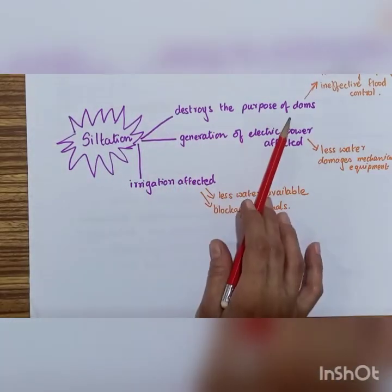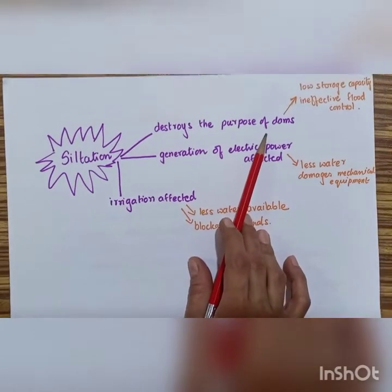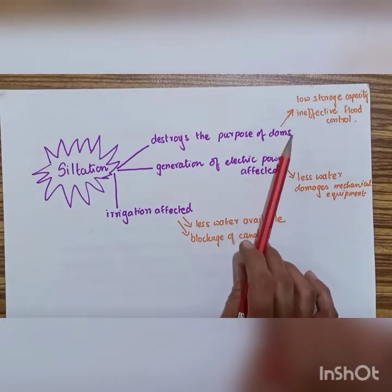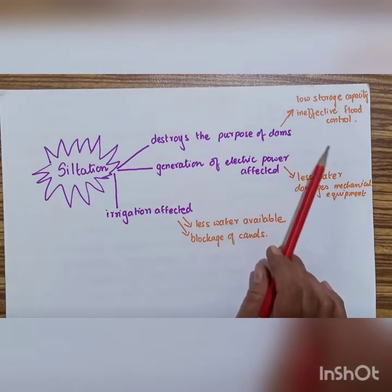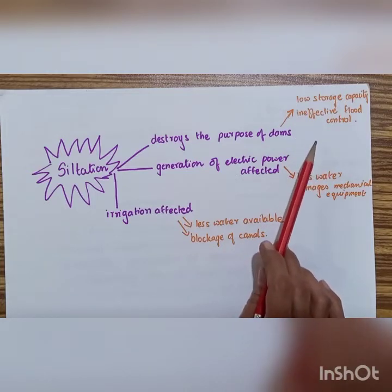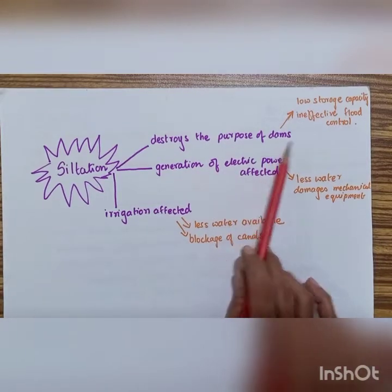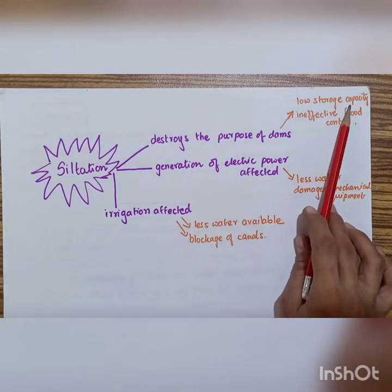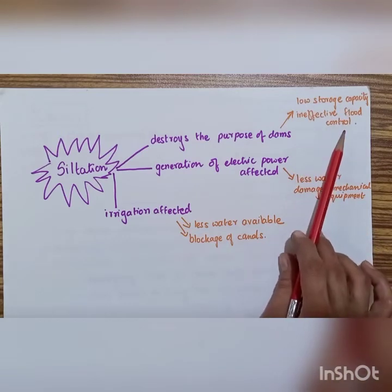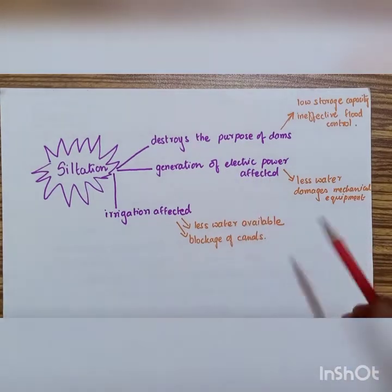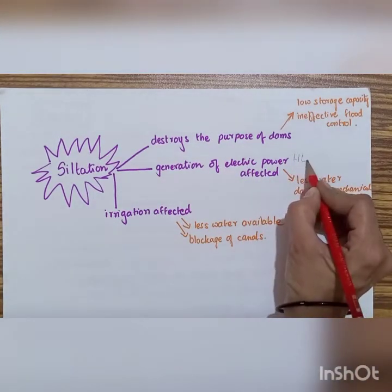Siltation actually destroys the purpose of the dam. Why are dams actually built? They are built for the generation of hydroelectric power and for controlling floods and also storage of water. But when silt accumulates at the bottom of the dams, it results in a low storage capacity of the dam and then ineffective flood control plus the generation of electric power, hydroelectric power, is also affected.